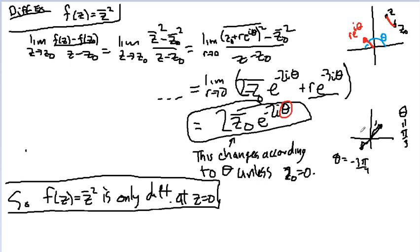Which means that just like in calculus, when the derivative from the left didn't equal the derivative from the right, it wasn't differentiable. Here we have an infinite number of directions and they're all getting different values unless the z naught is equal to zero wiping out the effect of the different directions. Thank you.